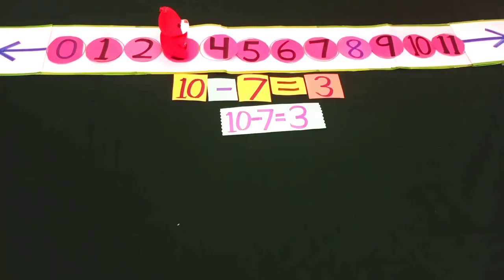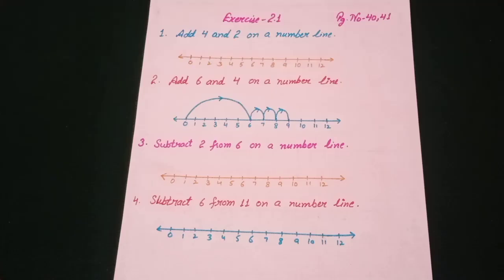Do you know students that the subtraction and descending order of numbers are hidden itself in the number line? When we subtract given numbers, we go from right to left on the number line with the help of backward counting.